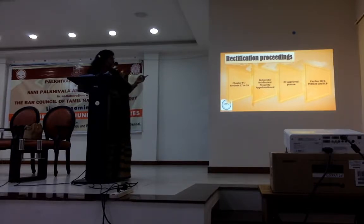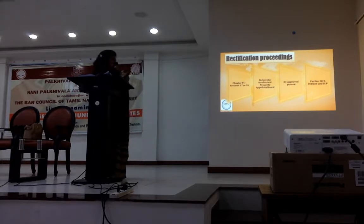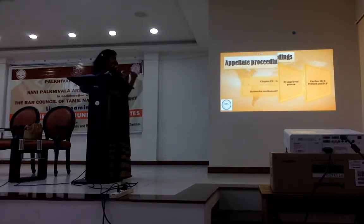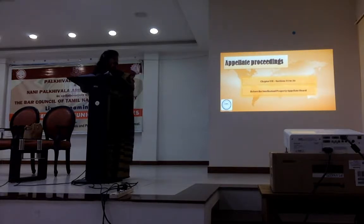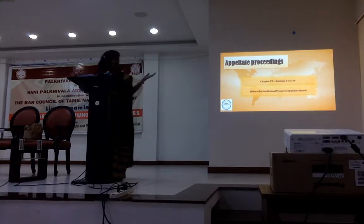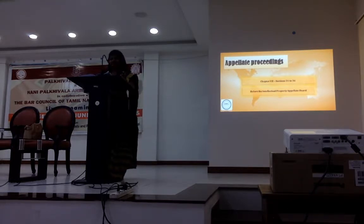For rectification proceedings in GI, you can go before the Intellectual Property Appellate Board. You have to be an aggrieved person, and there is no remedy beyond that — so you file a writ or go on SLP. You can also file an appeal if the order in the GI registry goes against you, under Chapter 7. Only the appellate board at Chennai can hear a GI proceeding — the circuit bench does not operate.